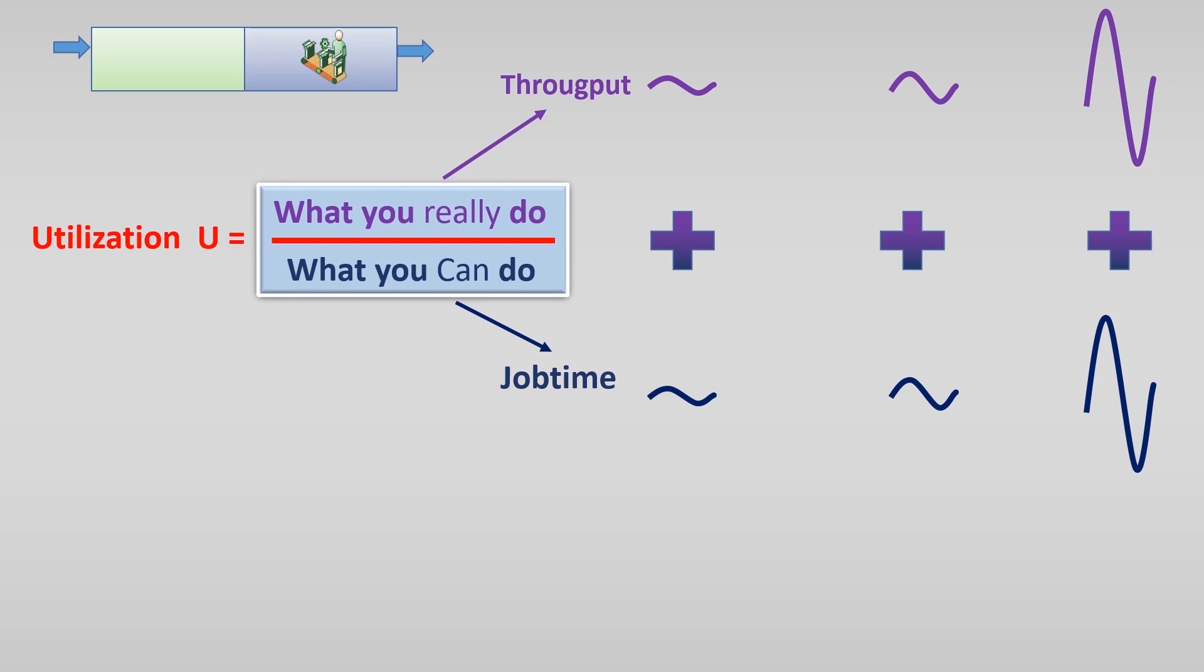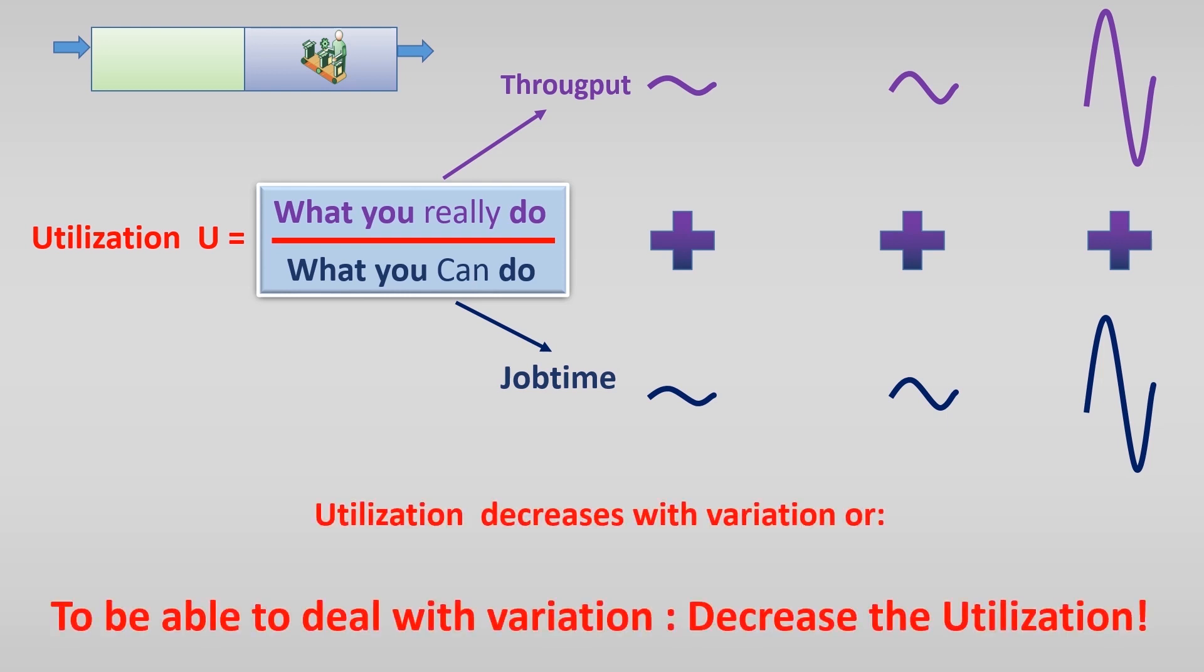This effect is worse for a high utilization than for a process with a low utilization. Because with a low utilization, you have some slack to deal with the unexpected variation.